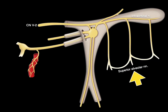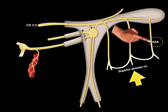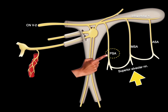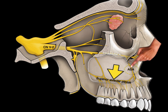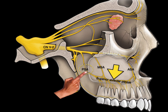Coming off the infraorbital nerve is a plexus of nerves called the superior alveolar nerves, or superior alveolar plexus, that provides sensation to the maxillary teeth on one side of the jaw. There are three branches: an anterior superior alveolar nerve (ASA), a middle superior alveolar nerve (MSA), and a posterior superior alveolar nerve (PSA). The infraorbital nerve gives rise to this superior alveolar plexus with the anterior, middle, and posterior superior alveolar branches. All of those carry general sensory information from the upper maxillary teeth, and these are the branches anesthetized by dentists during maxillary dental work.